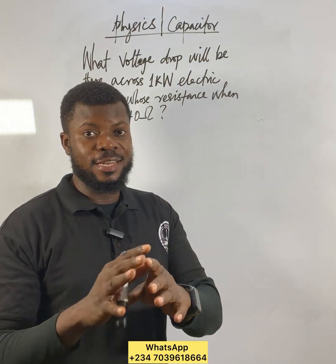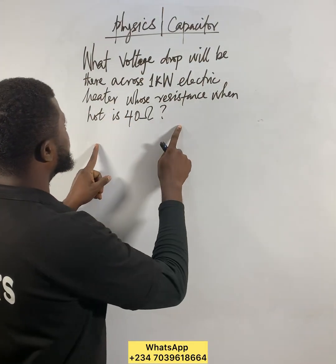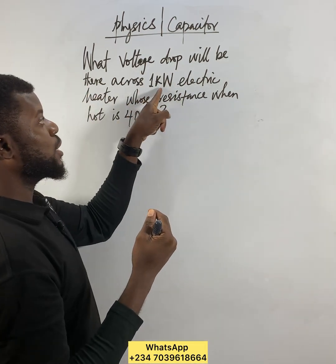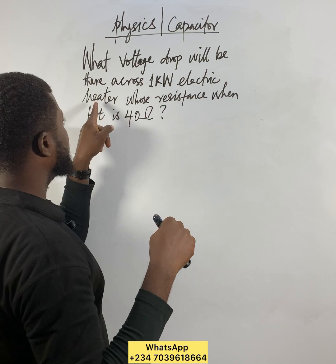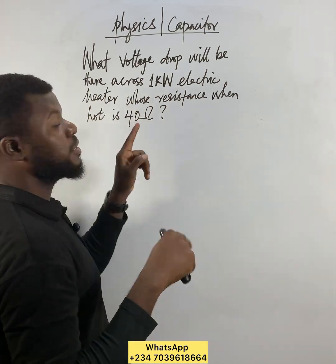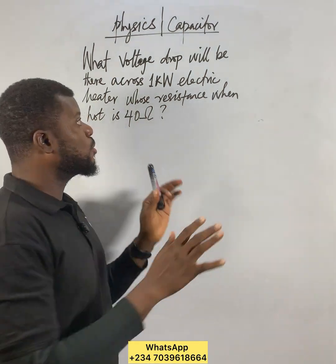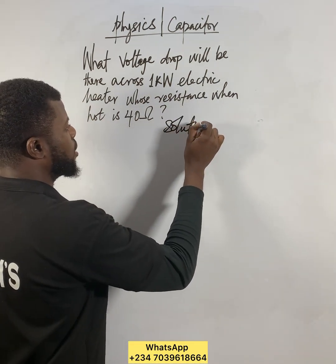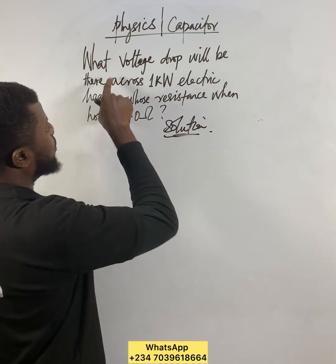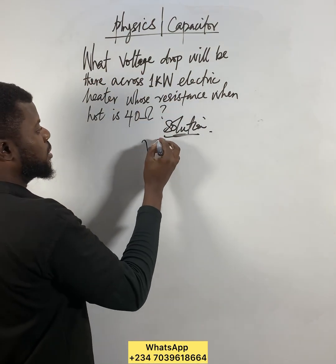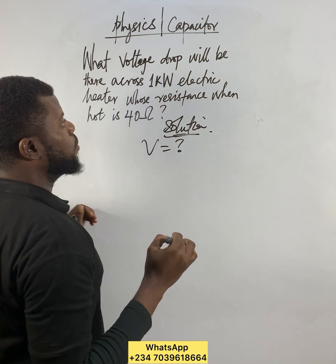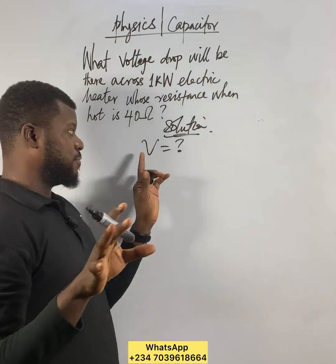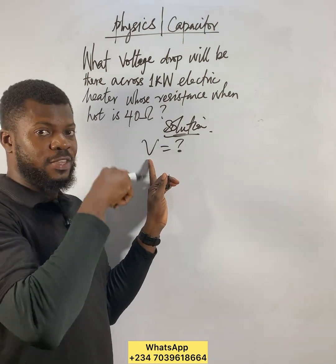Alright, this is not really hard — keep your mindset positive. The question is: what voltage drop will be there across a one kilowatt electric heater whose resistance when hot is 40 ohms? We know it's simple. We'll drop the solution quickly. The first thing we ask ourselves is: what voltage drop? Let me write voltage first.